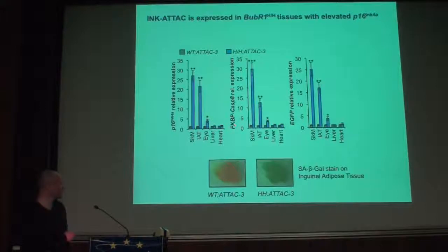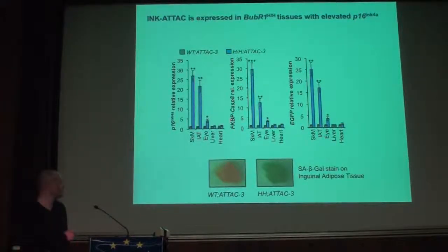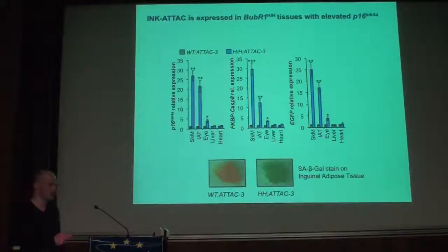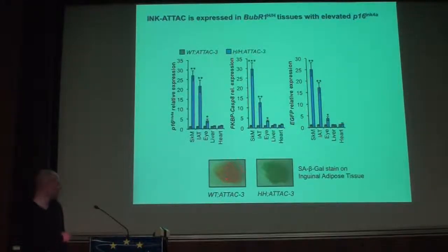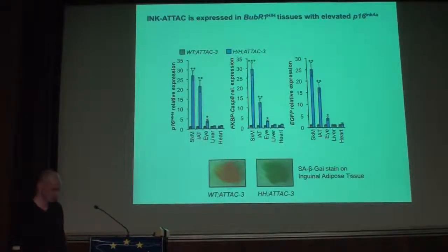This correlates with high P16 expression in cells where the ATTAC transgene is also expressed, as shown by Caspase 8 as well as GFP, which is also on the ATTAC transgene. As a comparison, at this age, wild-type animals are still free of senescence, while these hypomorphic animals have a highly positive beta-galactosidase stain in the inguinal adipose tissue.